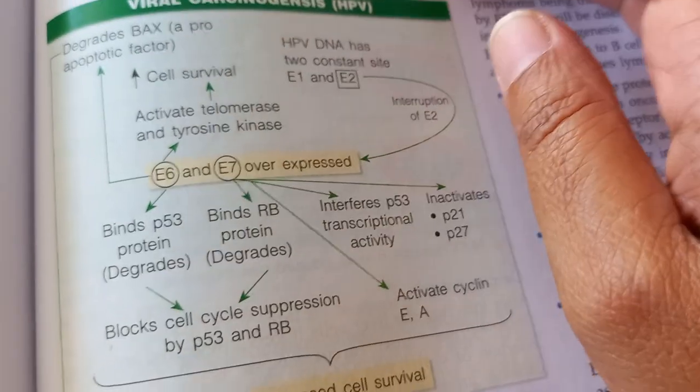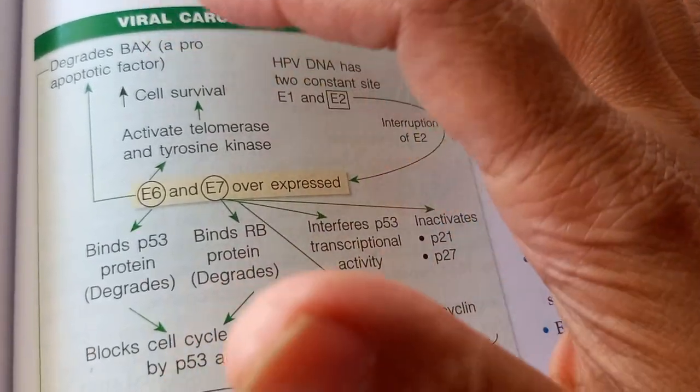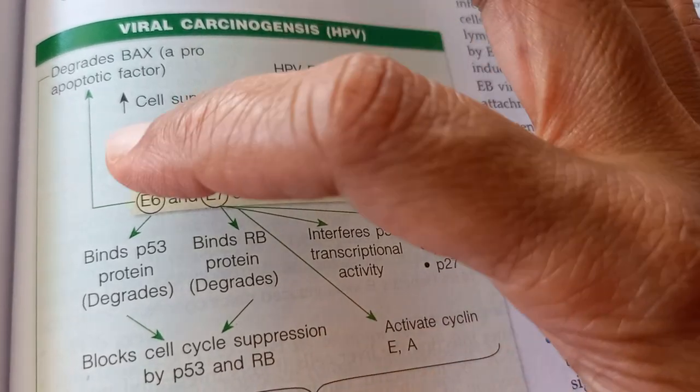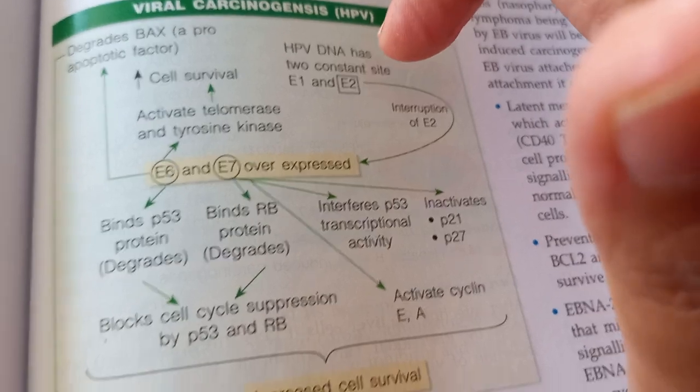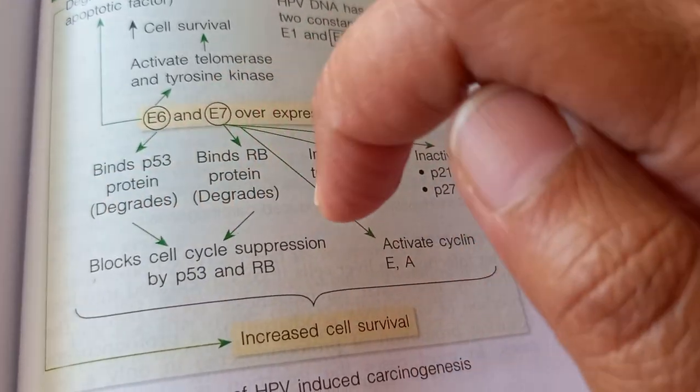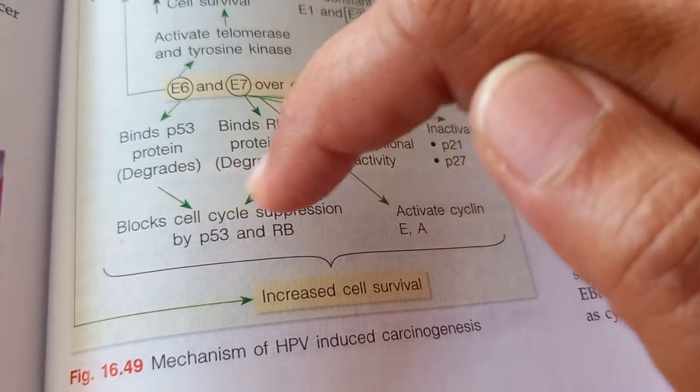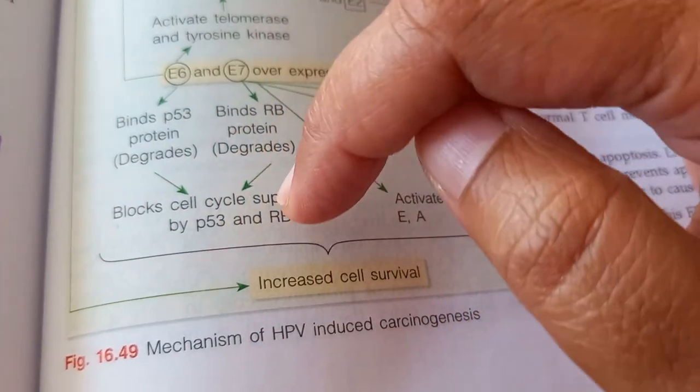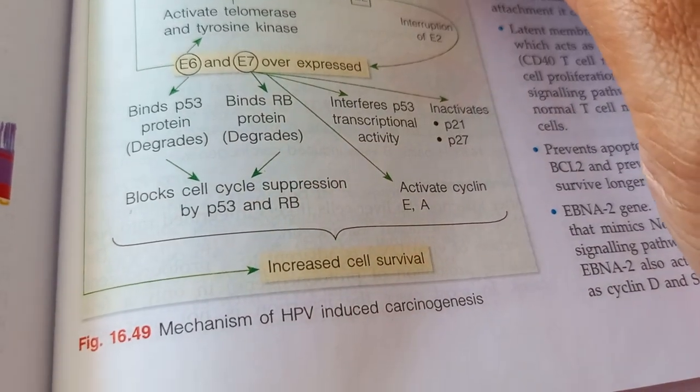Why does a virus lead to carcinoma? Because it degrades p53. And then some E6, E7 are overexpressed. This binds to some proteins, blocks the cell cycle suppression, P53, RB. This RB is the retinoblastoma gene. Increased cell survival.